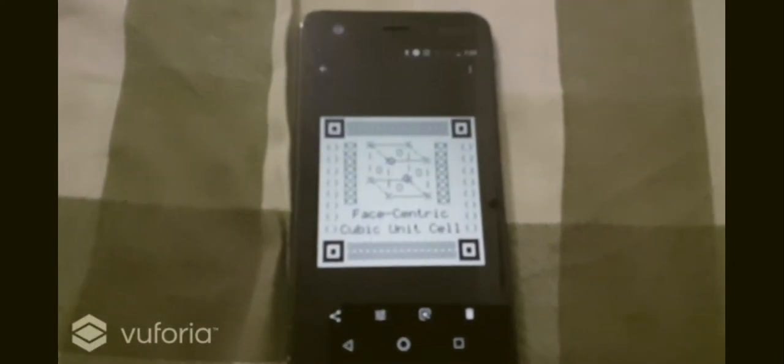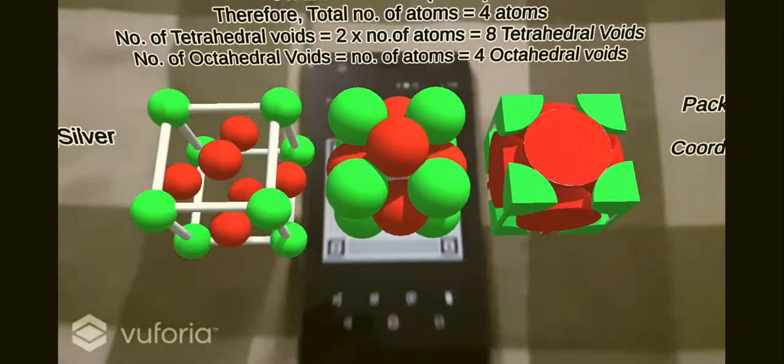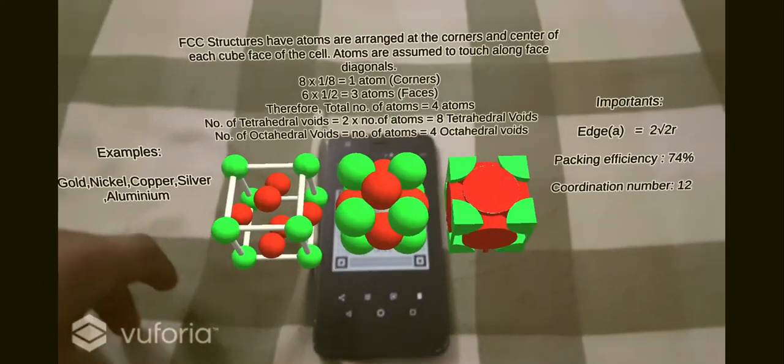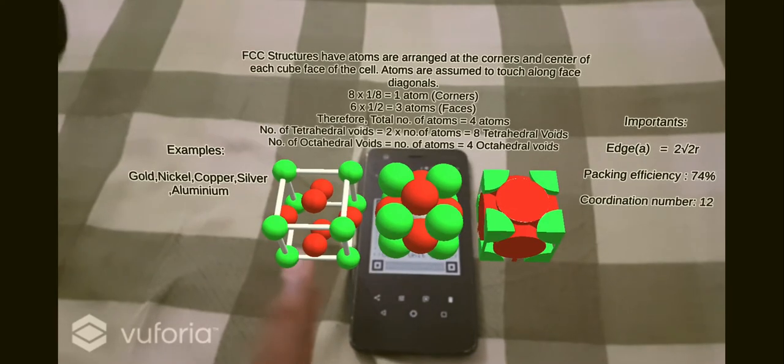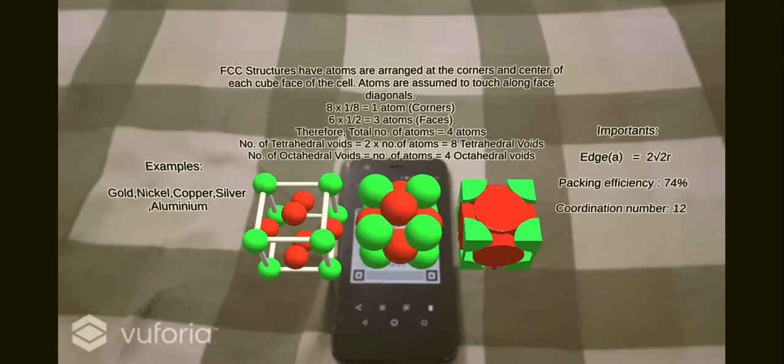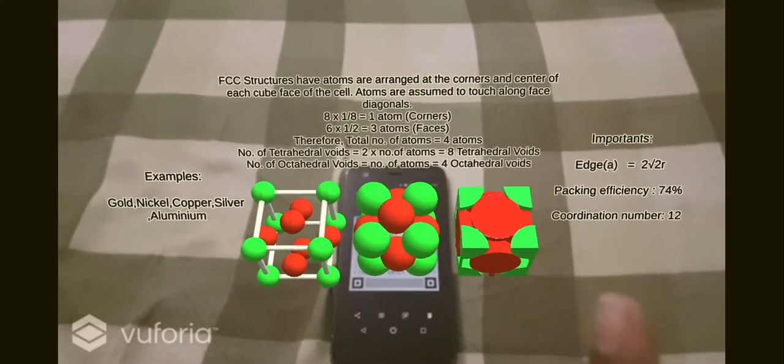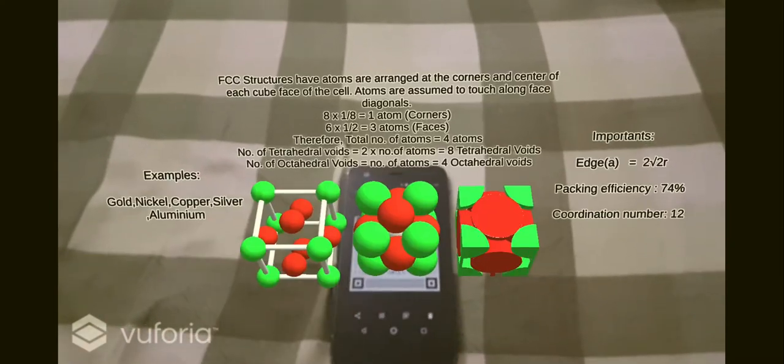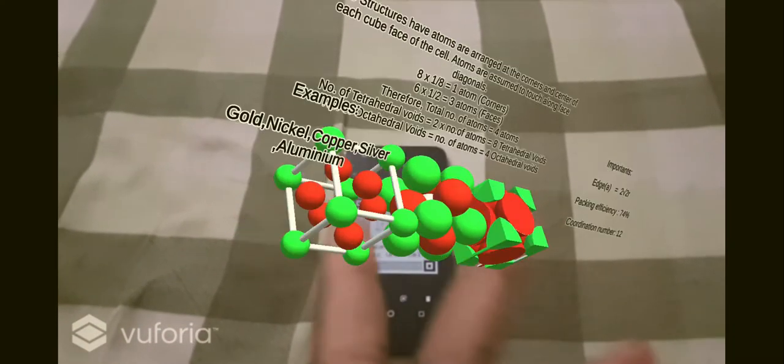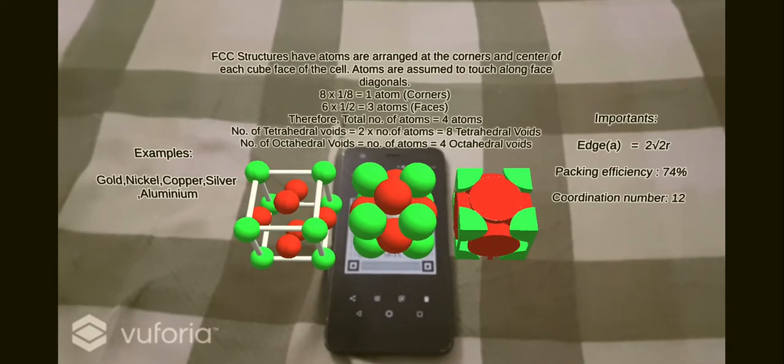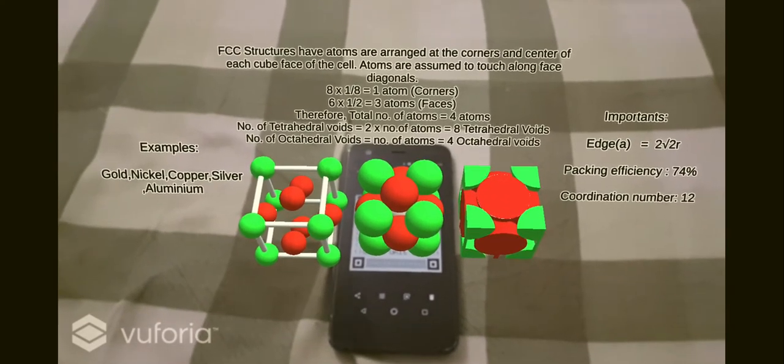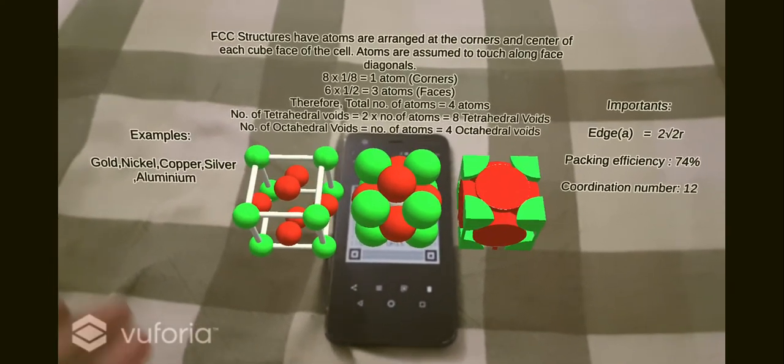Face-centric cubic unit cell. Let's scan this. There we have the most complex of them all. Atoms at the faces, the edge is 2 root 2r or root 8r. Packing efficiency is 74%, the coordination number is 12, and there's the FCC structure with all that information and examples.